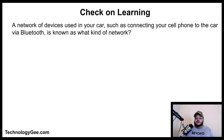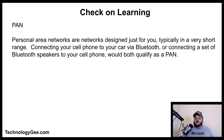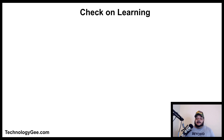Question two: A network of devices used in your car, such as connecting your cell phone to the car via Bluetooth, is known as what kind of network? The correct answer is a PAN — a personal area network. These are networks designed for short-range personal use, such as connecting your phone to your car or Bluetooth speakers.